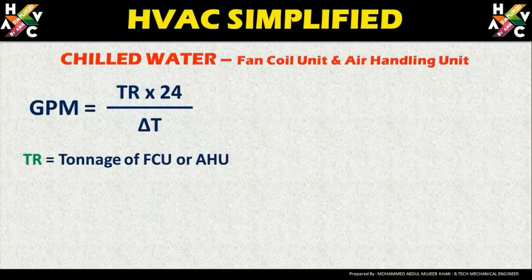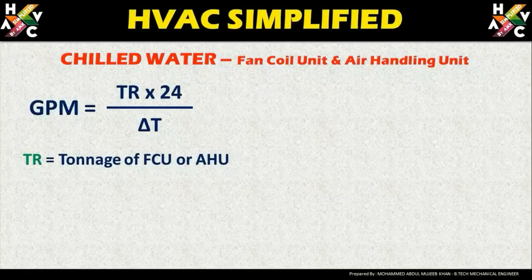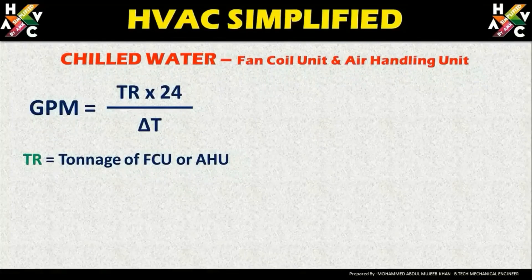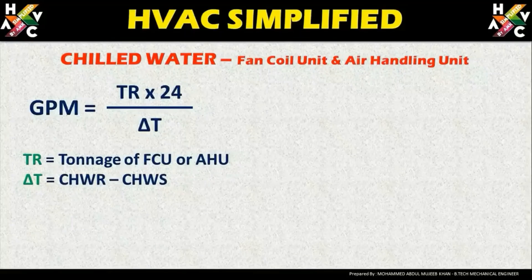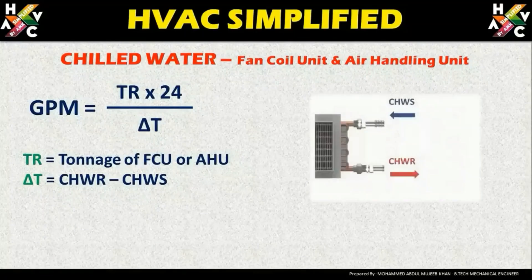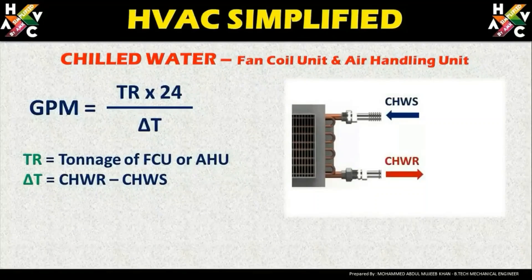TR is the tonnage of the fan coil unit or the air handling unit, which you get from the load calculation. This is the tonnage required for a particular fan coil unit or air handling unit. Delta T is equal to chilled water return temperature minus chilled water supply temperature.